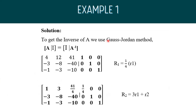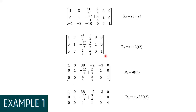To get the inverse of A, we use the Gauss-Jordan method. We must first normalize row 1 by multiplying it by one-fourth. We get row 1 as: 1, 3, 41/4, 1/4, 0, 0. Next, to eliminate the entry below, we multiply 3 by the current row 1 and add it to row 2, giving row 2 as: 0, 1, negative 37/4, 3/4, 1, 0.